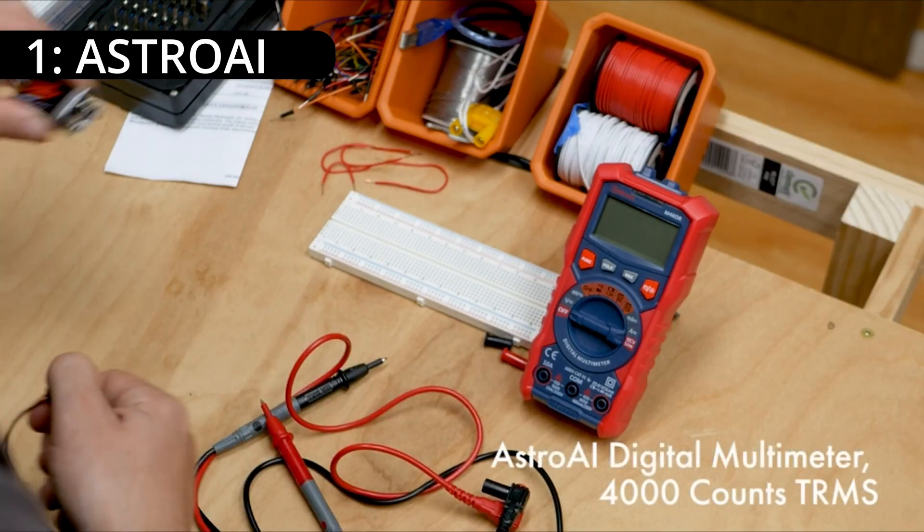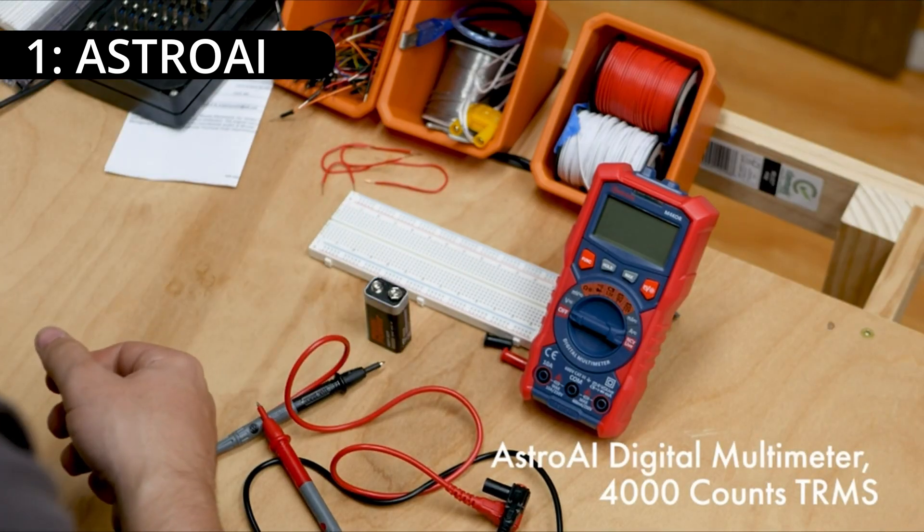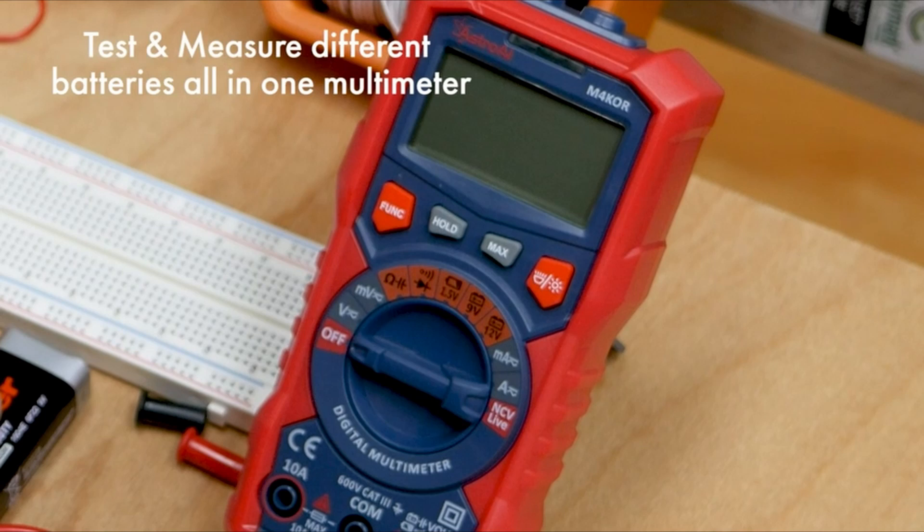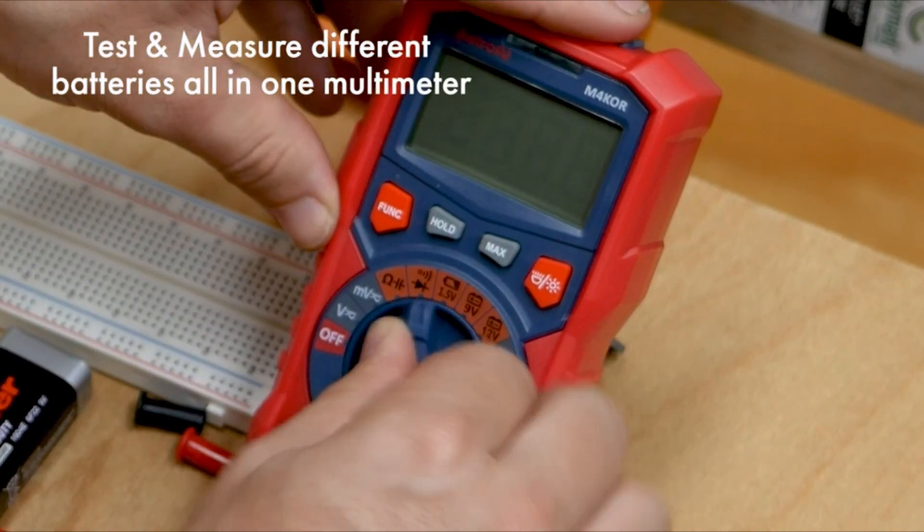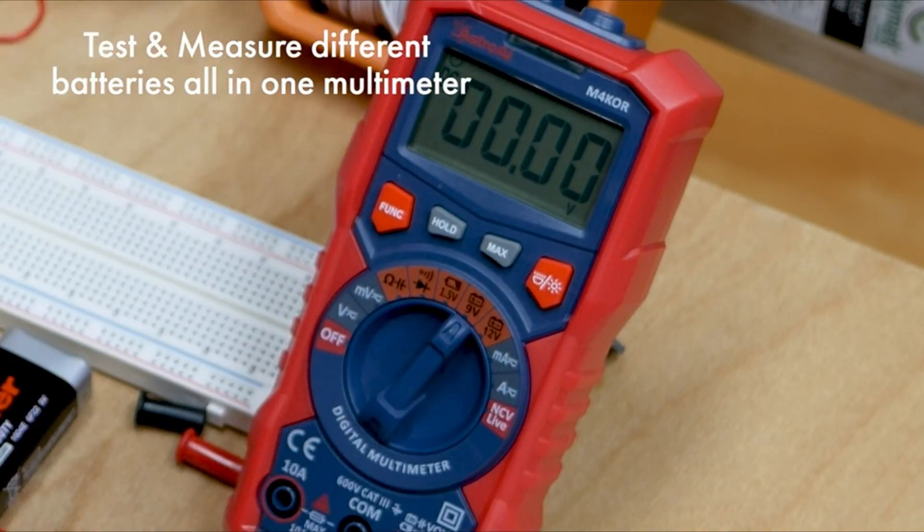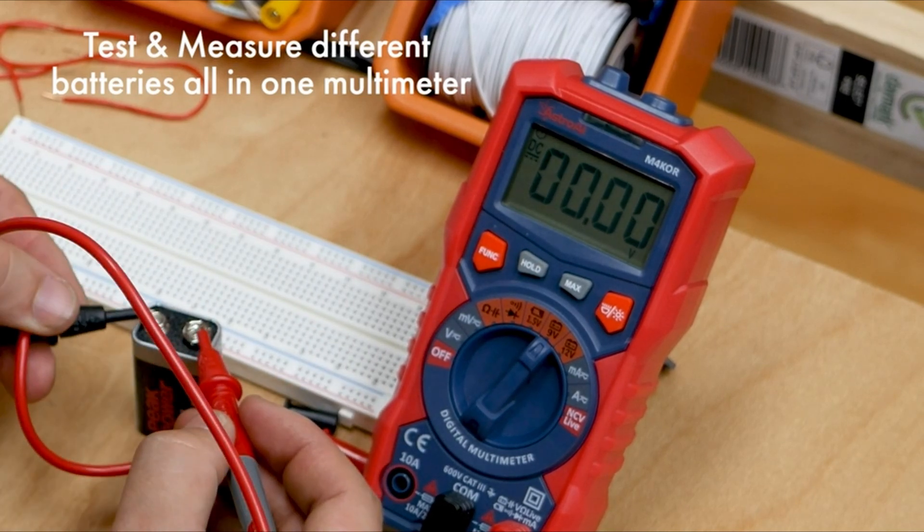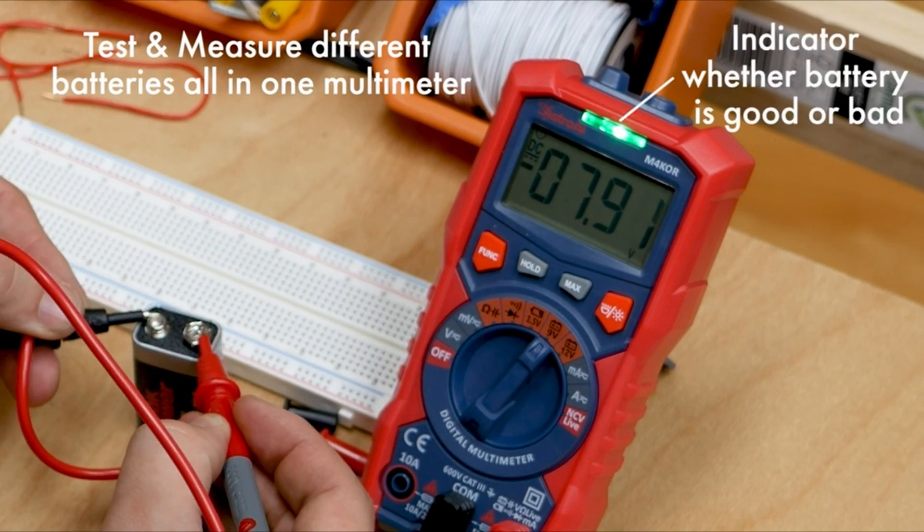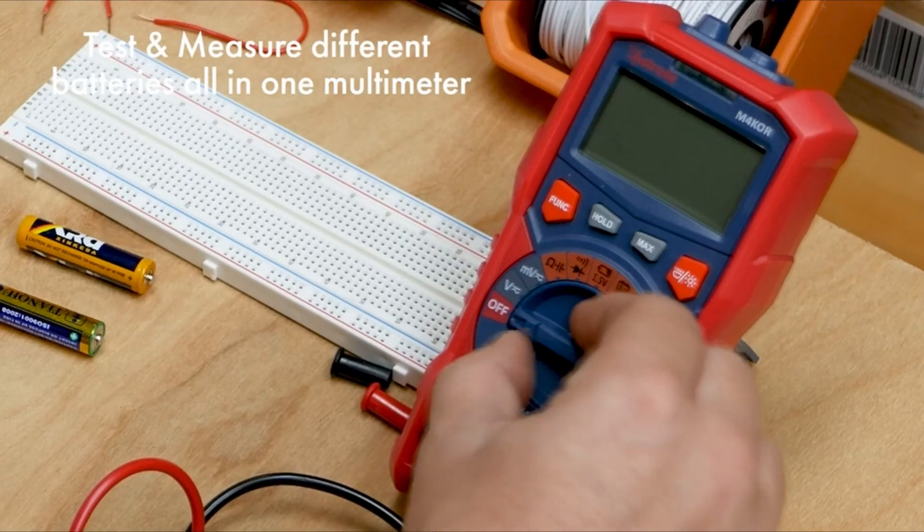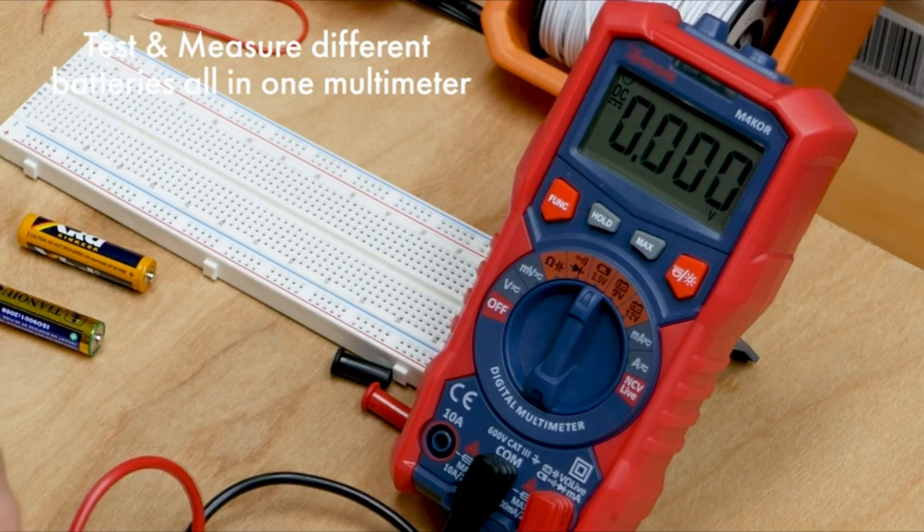On number 1, Astro-AI Multimeter Tester. The Astro-AI M4 QR Multimeter is recommended by the electrical engineer and reviewer Shafi Kusama for its reliability and accuracy in measuring AC-DC voltage, current, and resistance. The device also includes a non-contact voltage testing function with sound and light alarms.